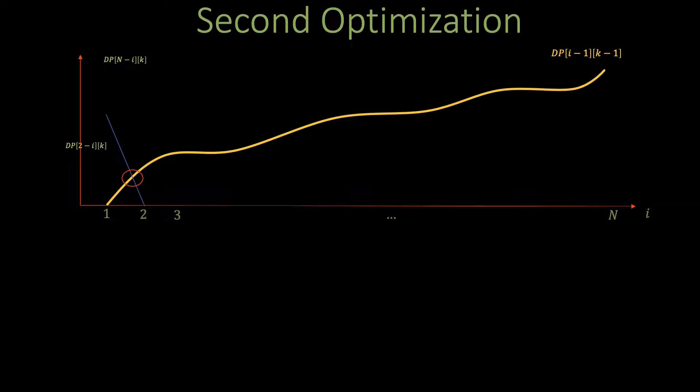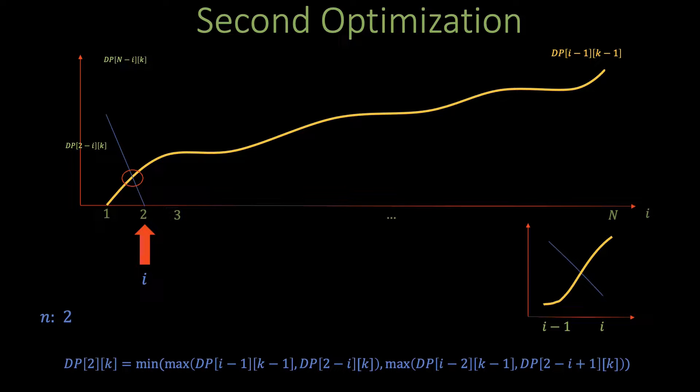All right now going back to the problem we will first as noted earlier fix k. We will initialize n to 2 and i to 1. Now as long as the yellow curve or dp[i-1][k-1] is below the current dp[n-i][k] then we will move i forward as its intersection point with dp[i-1][k-1] or the yellow curve must be to the right. So in this case we move i forward one element. Now dp[2-i][k] is below the yellow curve so we know that the intersection point happened before index i for n equals 2. so we calculate dp[2][k] in the same way explained in the previous video.